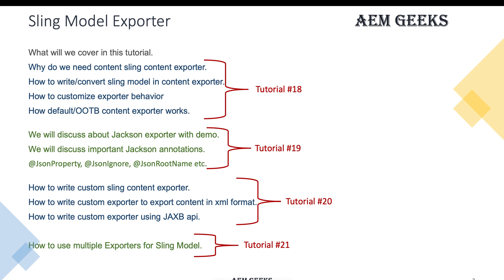This is tutorial number 18 in the playlist. Tutorial 18 covers basics, tutorials 19 and 20 cover the JSON demo and custom exporter, and we'll also see multiple exporters for a Sling Model. You can jump to any tutorial you're interested in, but I suggest going through this one first as it covers the basics.